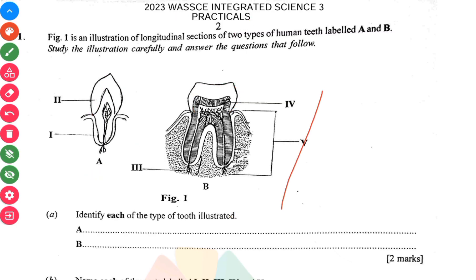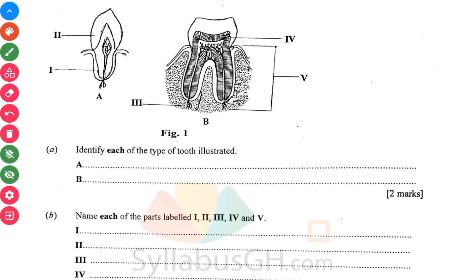We move on to B: name each of the parts labeled I, II, III, IV, and V. Your I is your cement. Your II is the enamel, this is the hardest part. Then you have your III, it could be your blood vessels or nerves. Then your IV, it's your dentine. Then your V, the root of the whole molar.